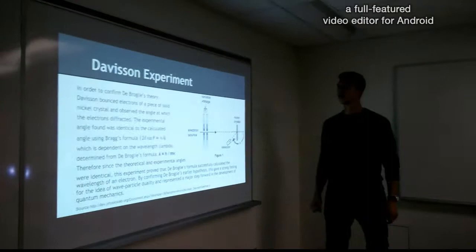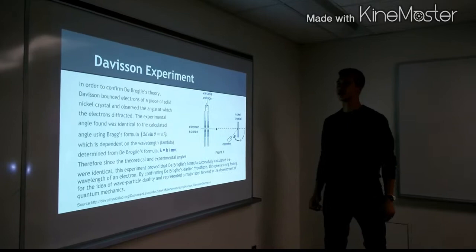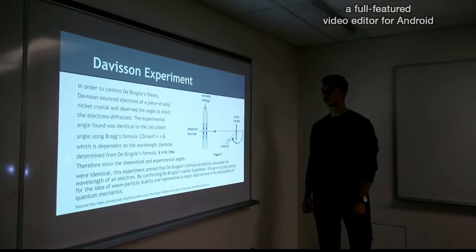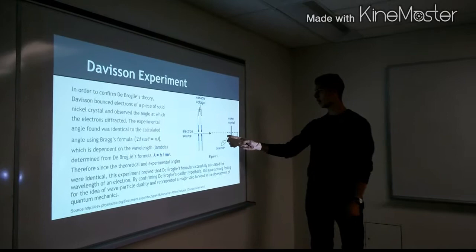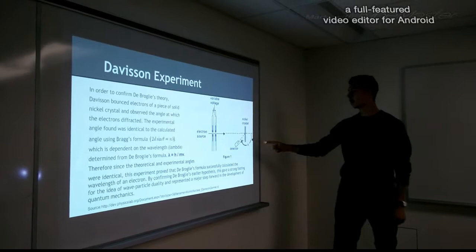Three years after De Broglie created his hypothesis, it is now time for two other scientists to confirm his theory. In 1927, in order to confirm De Broglie's theory, Davison bounced electrons off a piece of solid nickel crystal and observed the angle at which the electrons diffracted. So here's the electron source, and here's a variable voltage which accelerates the electrons. It shoots electrons through a certain path, which bounces off a piece of nickel and is deflected onto the detector plate.